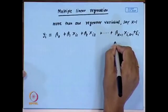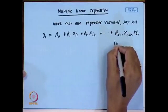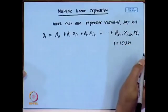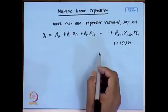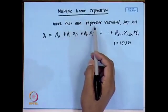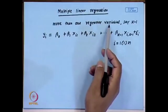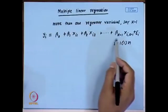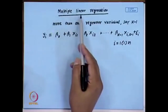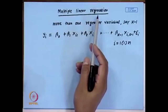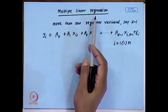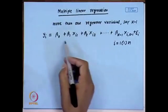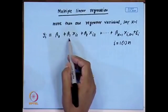Here i runs from 1 to n. Since we have more than one regressor variable, that is why we call it multiple regression, and since the model is linear, that is why it is called multiple linear regression. One should be careful — linear means it is a linear function of the unknown parameters.